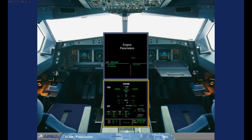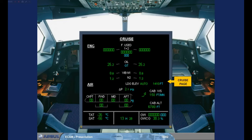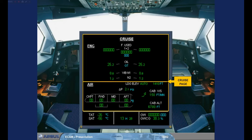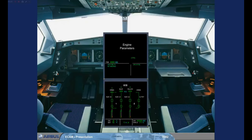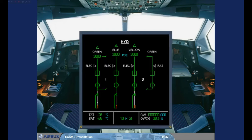The System Display is used to display particular system information. In the example shown, the cruise page is displayed. This is the page normally seen for the majority of the time that the aircraft is airborne. Useful information from several systems is displayed during flight. The individual indications will be covered in the appropriate system modules. The System Display can also be used to display synoptic diagrams of the aircraft systems. In the example shown, the hydraulic system page has been called.